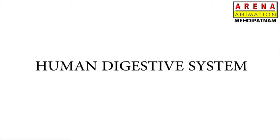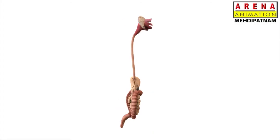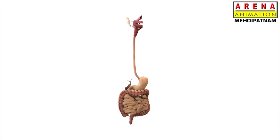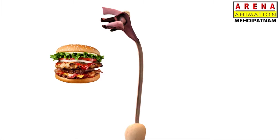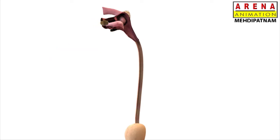The digestive system consists of the digestive tract, called the alimentary canal, which forms a continuous passage from the mouth to the anus. As food moves downwards into the alimentary canal, it comes in contact with a series of juices called digestive juices, which contain various enzymes.